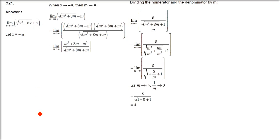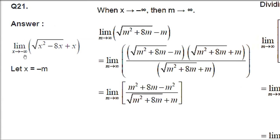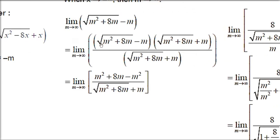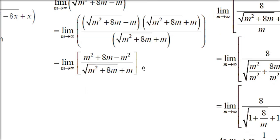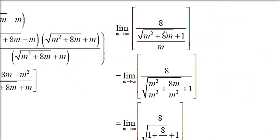Question 21. As I said, same thing you have to do because x is tending to minus infinity. Change it into plus infinity by replacing x as minus m. So when x tends to minus infinity, m tends to infinity. So put minus m in place of x: minus m whole square is m square, and 8 times minus m is minus 8m, and the x term becomes plus minus m.